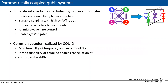Parametrically coupled qubits are a platform where we can have many qubits or linear modes sharing a common coupler. This common coupler mediates tunable interaction allowing for increased connectivity between our modes and high on-off ratio of these interactions, enabling removal of crosstalk between qubits and faster gates.